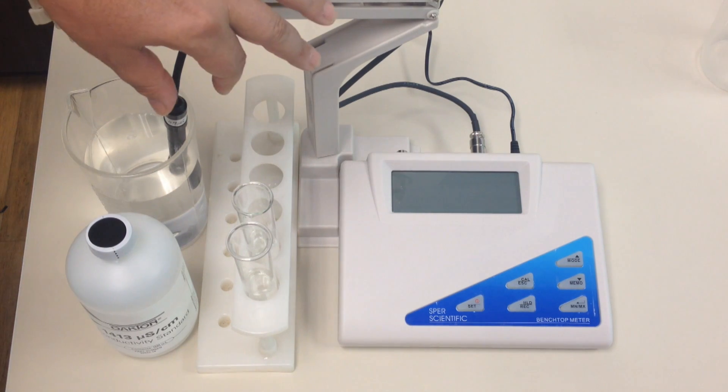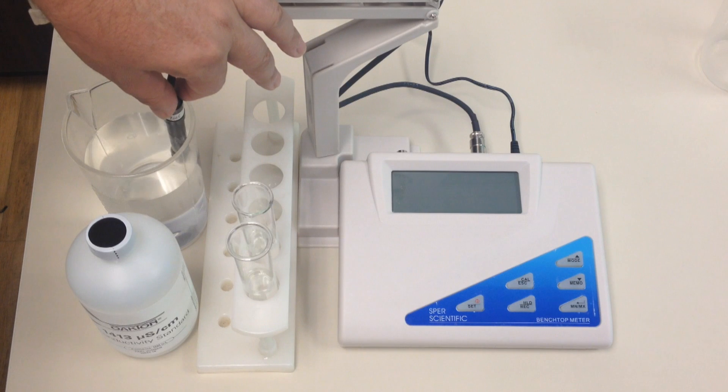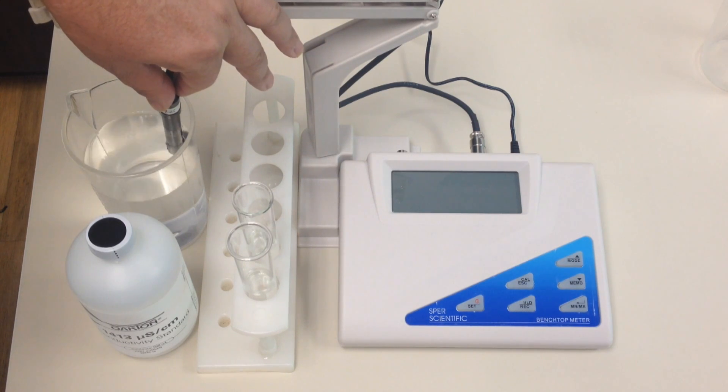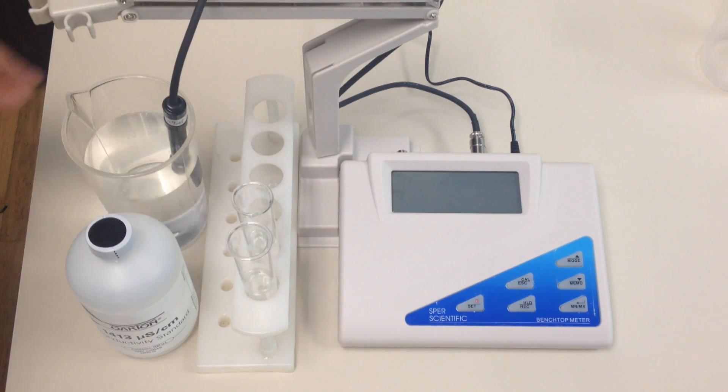So the first thing you do after you get the unit, or if you haven't used the unit in a while, is make sure it sits in distilled water for at least 30 minutes. Now our probe has been sitting in distilled water for at least 30 minutes. Also, every time you calibrate the unit, you must use fresh solution.